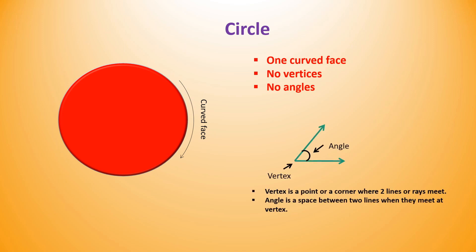Obvious questions are what is vertex and what is an angle. We can define these two terms by referring this diagram. Vertex is a point or a corner where two lines or rays meet. While angle can be defined as a space between two lines when they meet at vertex.